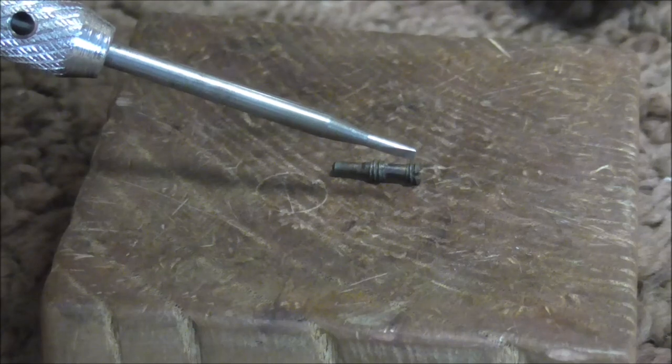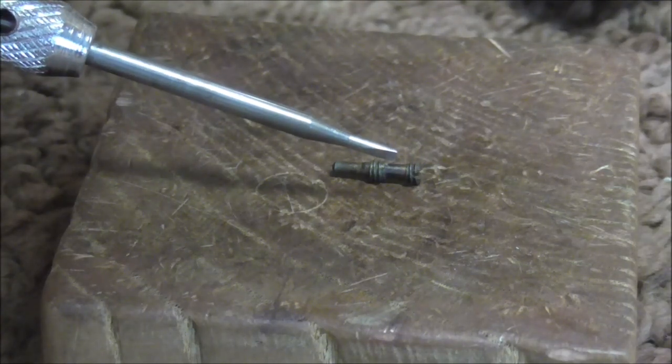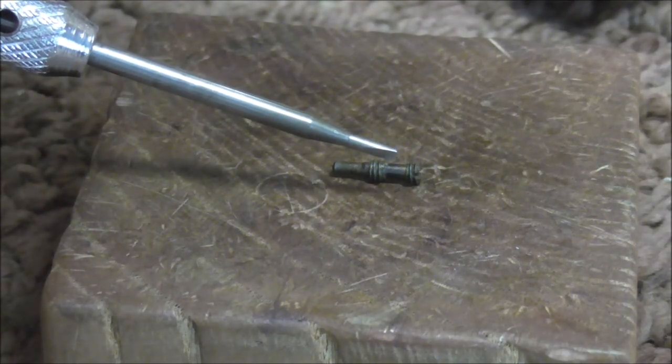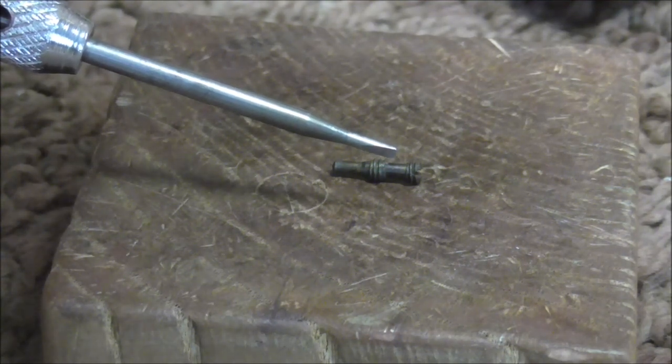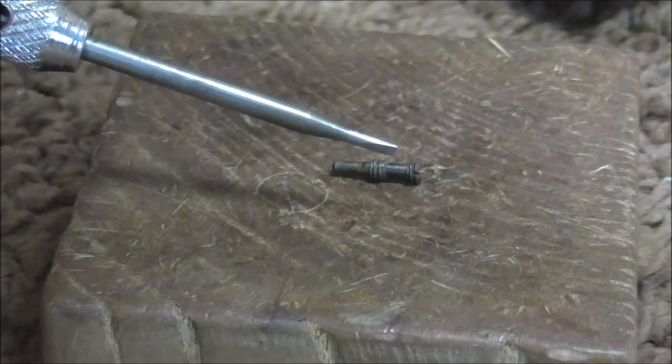There are actually two threaded portions there and there. And in the middle, that is smooth. And that is so you can put a locking screw in the post and lock the screw into place after you get it to where it needs to be.